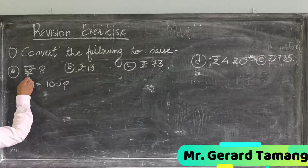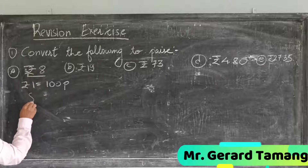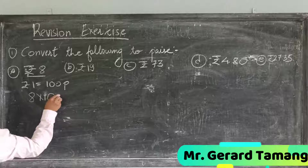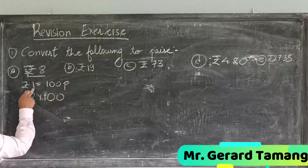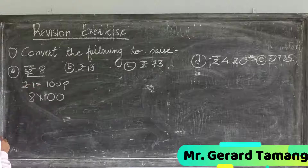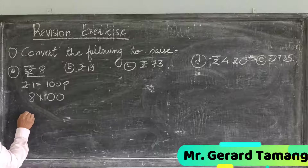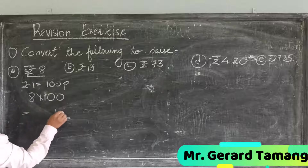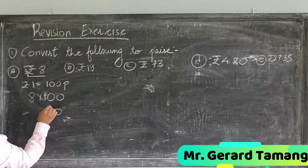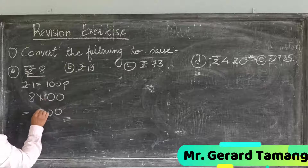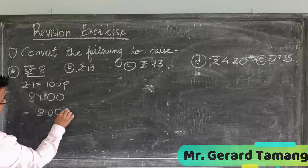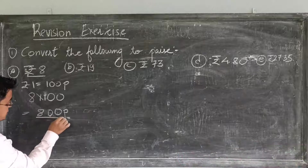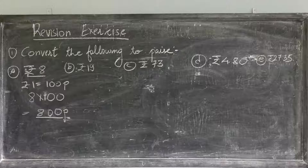To convert 8 rupees into paise, we do 8 into 100. Because 1 rupee is equal to 100 paise, 8 into 100 is equal to 800 paise. The answer is 800 paise.